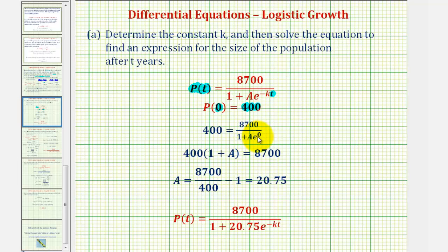Notice how the fraction is gone on the right, and we have this extra factor of (1 + A) on the left. To solve for A, we first divide by 400, then subtract 1, which gives us A = 20.75. We substitute that value in for A, giving us the newest form of P(t).